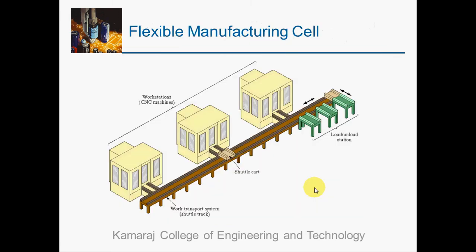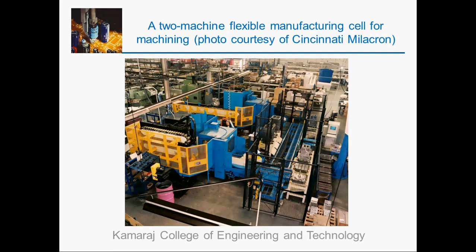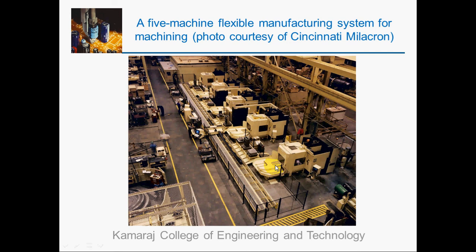The next illustrative example is for an FMC, showing three CNC machines automated by a material handling system and controlled by a computer control system. A photograph shows two CNC machines interconnected by automated material handling equipment — this is a two-machine FMC. Another photograph shows a five-machine FMS with five CNC machines automated by an automated material handling system and controlled by an integrated computer control system.